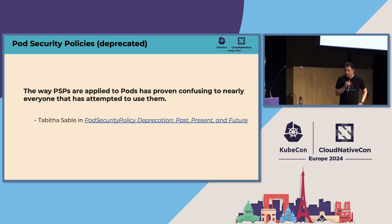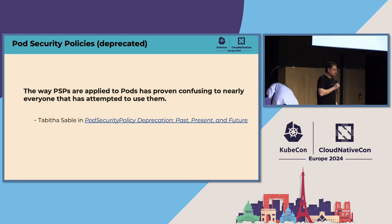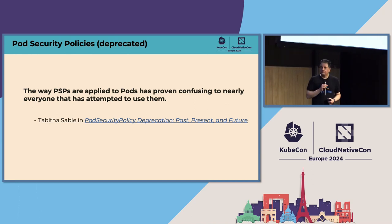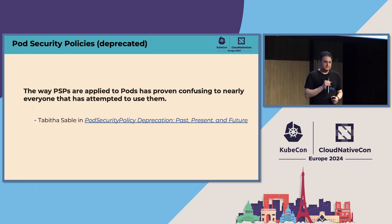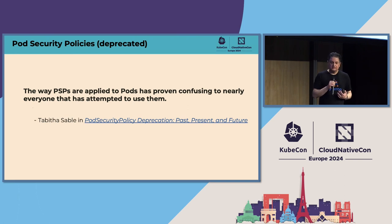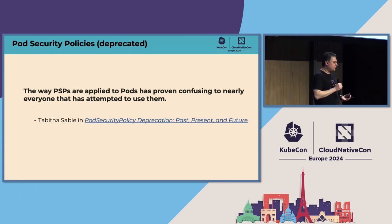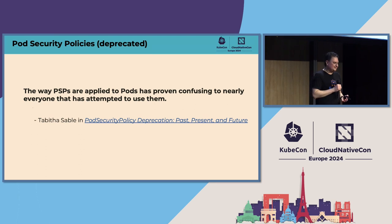Let's talk about why PSPs got deprecated and what some of the challenges were. There's a great white paper written by Tabitha, who leads SigSecurity in Kubernetes, mentioning a lot of usability challenges and problems. The main challenge, as Andy also mentioned, was that although everybody understood why PSPs are important, it was just hard to configure and use correctly, especially at scale. There were too many variations, too many ways to trip yourself and misconfigure things — which is the opposite of what you want from a policy.